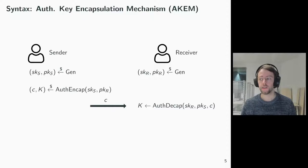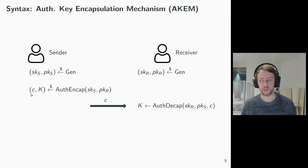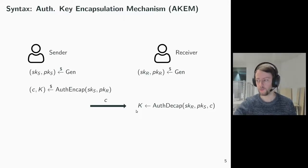The authenticated KEM syntax looks similar. The encapsulation function takes a sender secret key and a receiver public key and returns an encapsulation ciphertext and a shared secret key. The authenticated decapsulation function takes a receiver secret key, a sender public key, an encapsulation ciphertext and returns the shared secret.